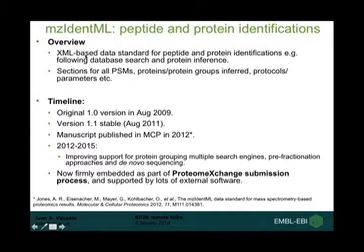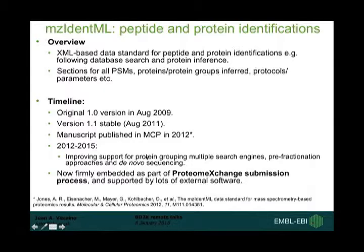The second data standard format, which is getting more and more widely used, is mzIdentML. It is an XML-based data standard for peptide and protein identifications — for instance, to capture all the parameters and results following database search and protein inference. It can capture information for protein-spectrum matches, protein groups, protocols, and parameters — basically everything needed to fully represent a spectrum search containing only identification data. The manuscript was published in Nature Chemical Biology in 2012, and version 1.1 is the stable version, released more than four years ago. We have also been working on version 1.2, which I will mention later.